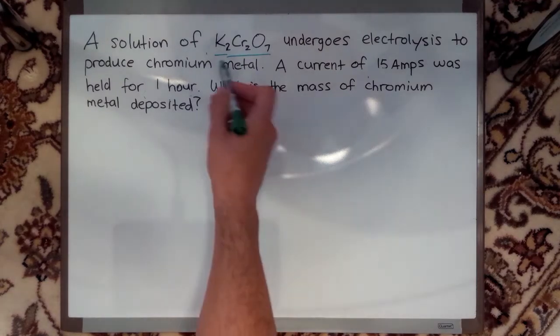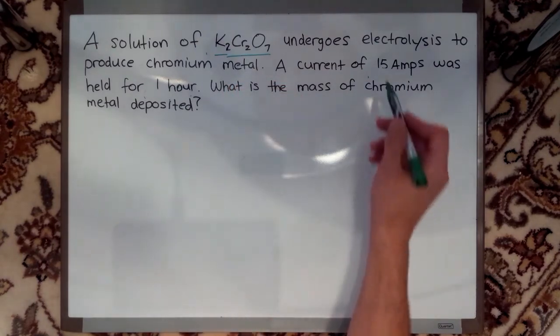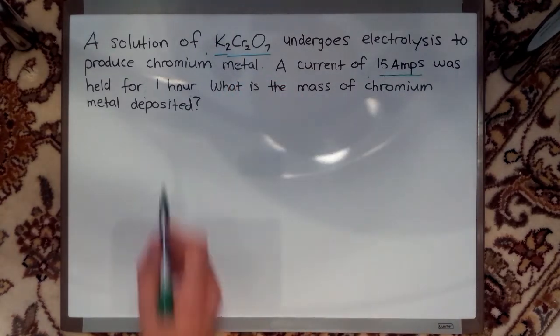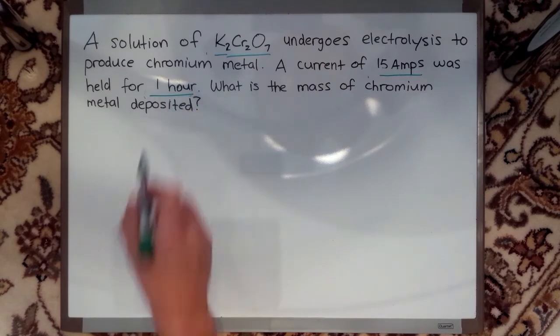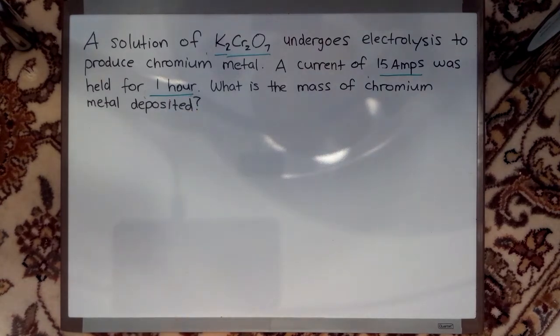So we have our K2Cr2O7. There are 15 amps of current and we have the current being applied for one hour. Anytime you're doing electrolysis problems, the first thing you want to do is find the oxidation number on these atoms.